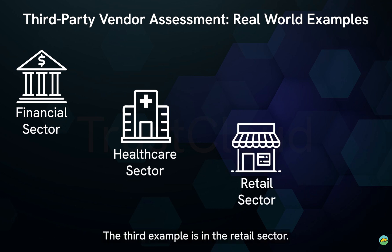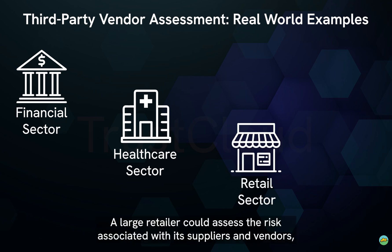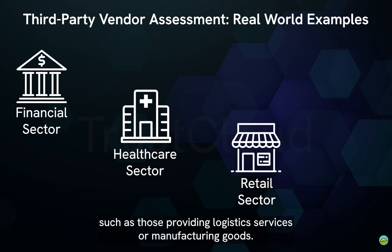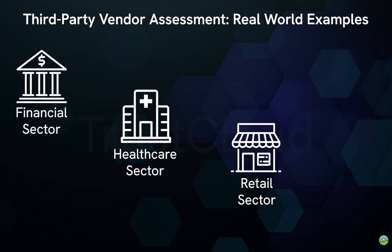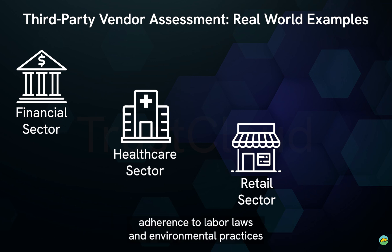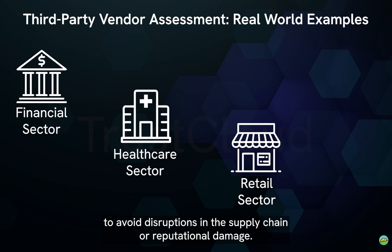The third example is in the retail sector. A large retailer could assess the risk associated with its suppliers and vendors, such as those providing logistic services or manufacturing goods. The assessment might include evaluating the supplier's financial stability, adherence to labor laws, and environmental practices to avoid disruptions in the supply chain or reputational damage.